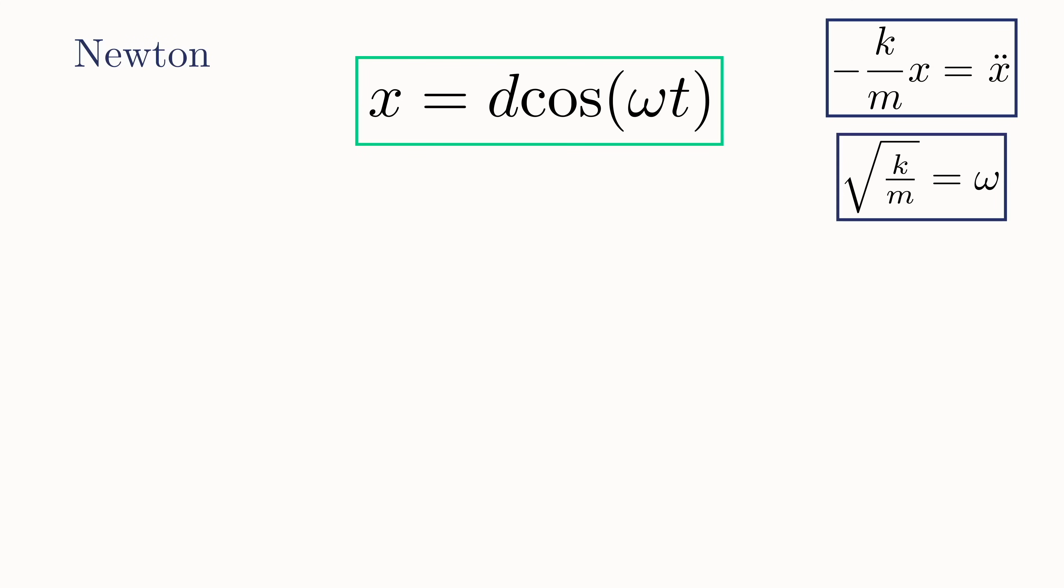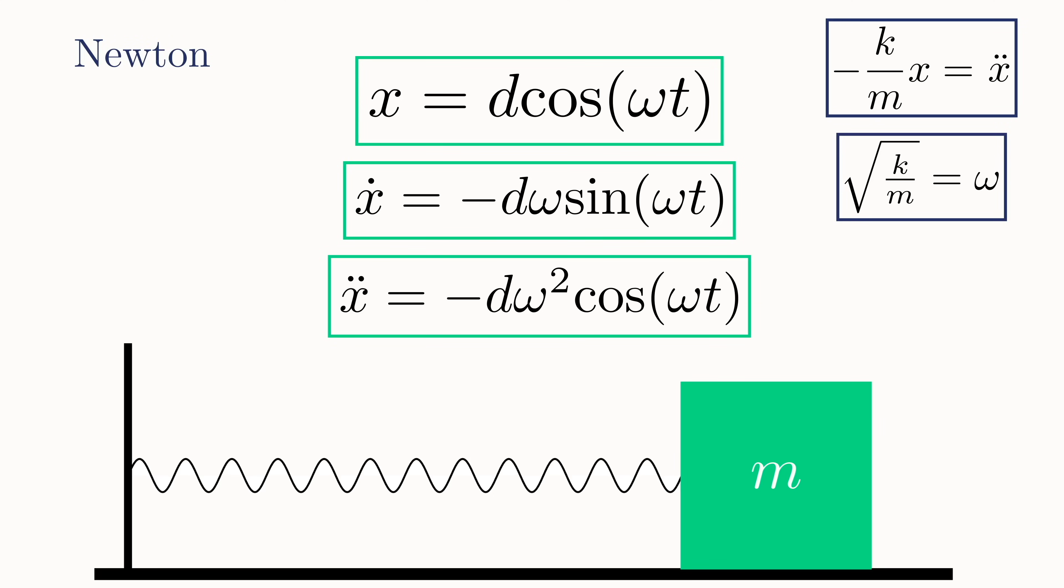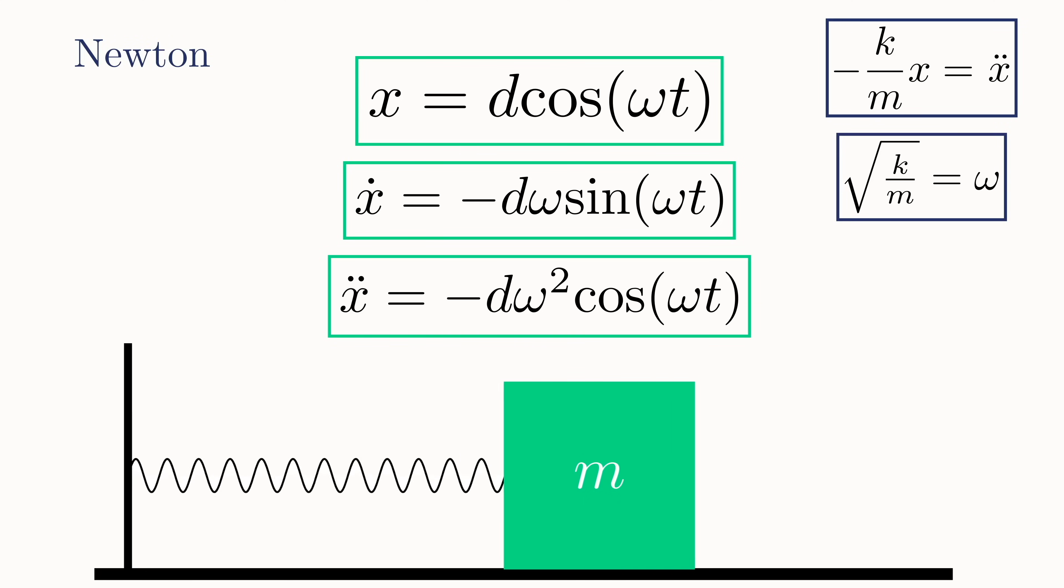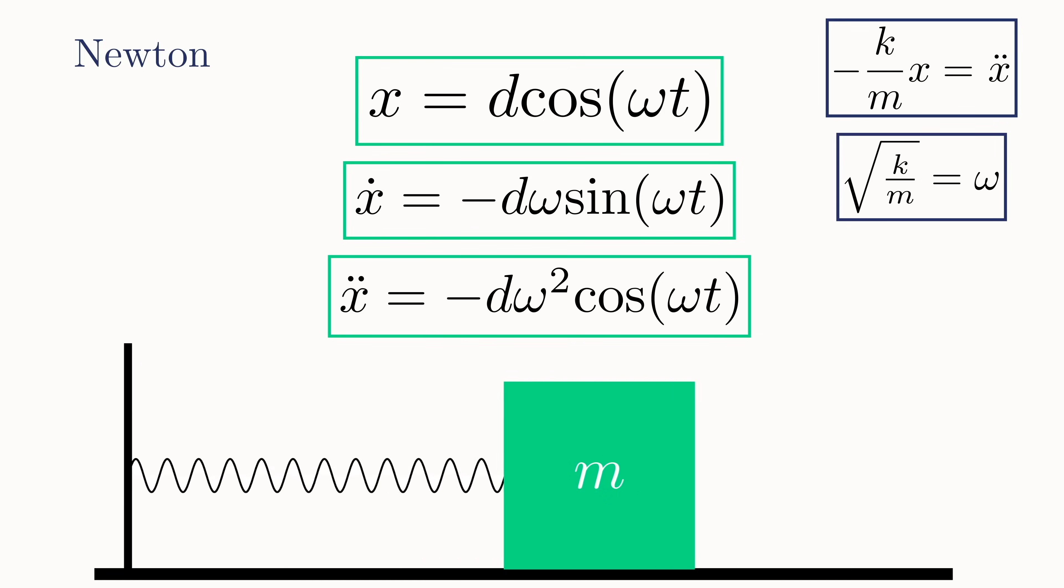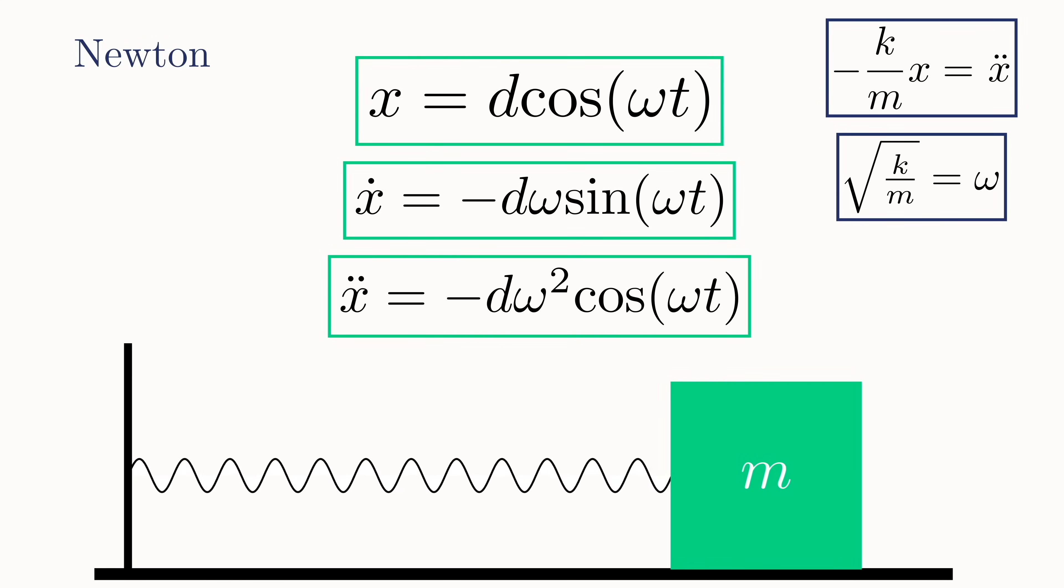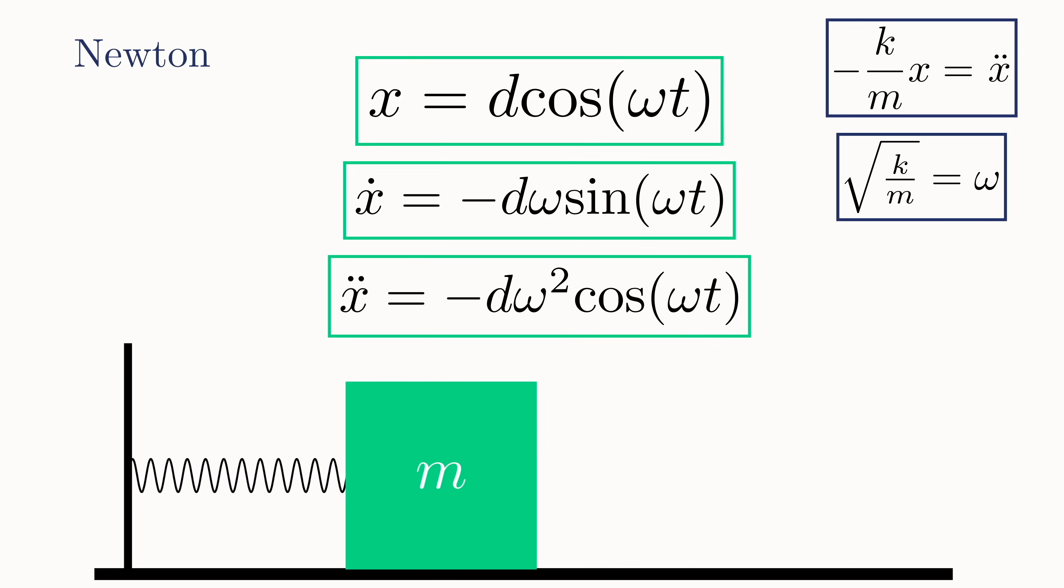And similarly, we can also determine the velocity and acceleration at any point in time as well. Now, letting the mass go, the mass obeys these equations, oscillating back and forth across the equilibrium point with an amplitude d each time. And since there is no friction and no other net forces acting on the entire system, this motion will continue on forever.